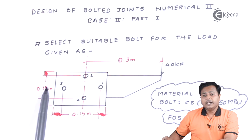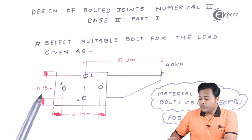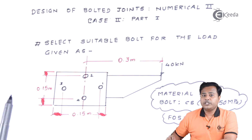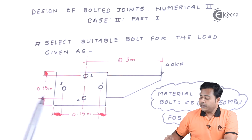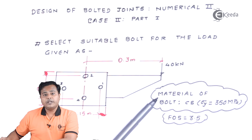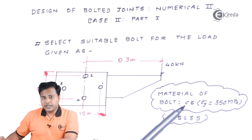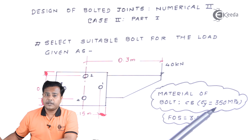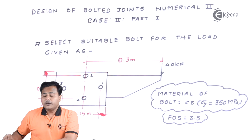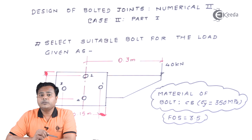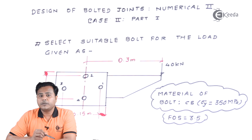We have been given the center-to-center distance vertically and horizontally for the bolts, giving us the exact information required. Additionally, material of the bolt is given — carbon steel with yield strength 350 megapascal. The material has already been specified along with its properties, so we need not select material separately.